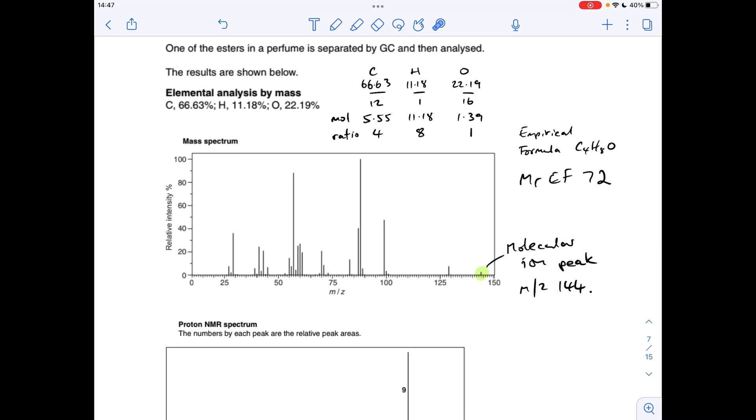So the molecule has an MR effectively of 144, its empirical formula mass is 72. So how do they compare with each other? Well, that's twice that. So the actual molecular formula must be double this, C8H16O2.